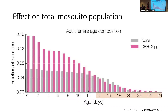Question: Does this depend on density dependence assumptions? We put the density dependence in larval development — a classic asymptotic larval density dependence — and it's only in the larval stage, not in the pupal stage.